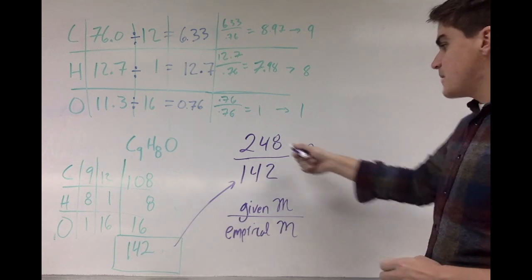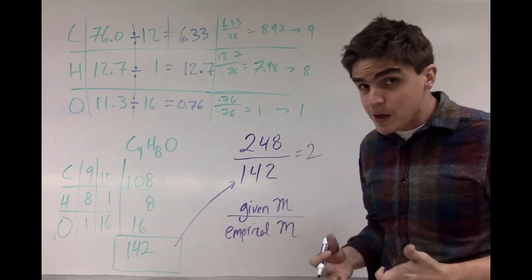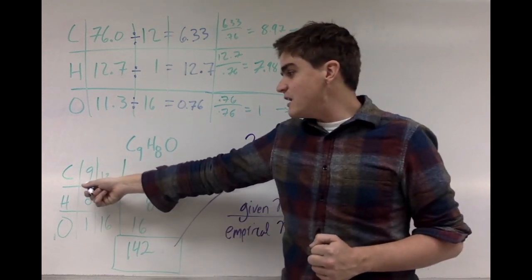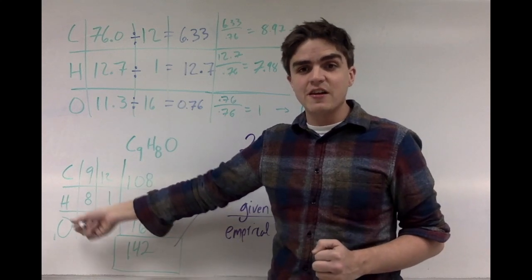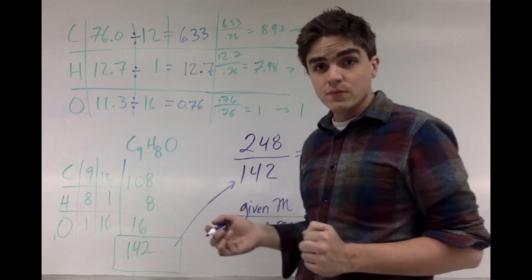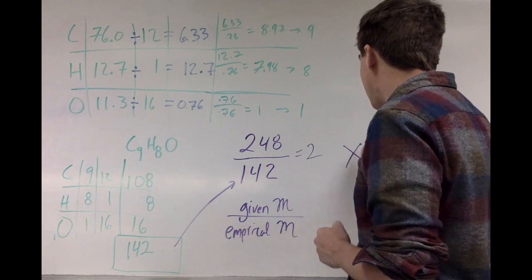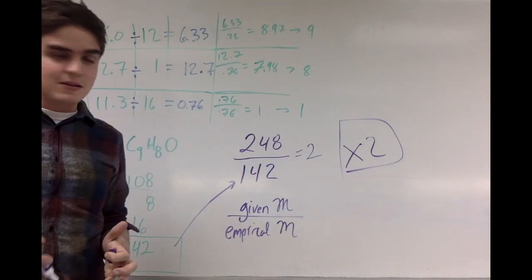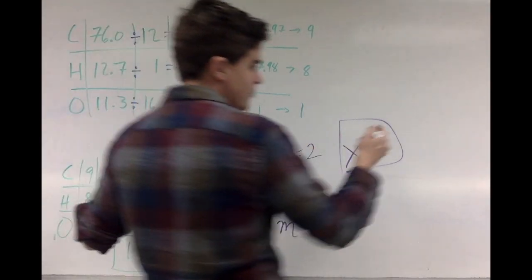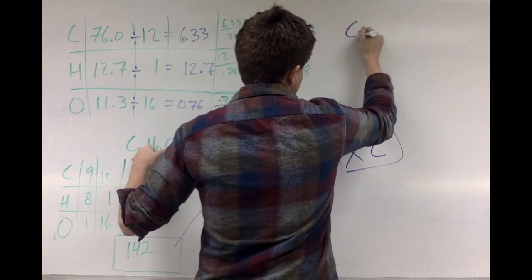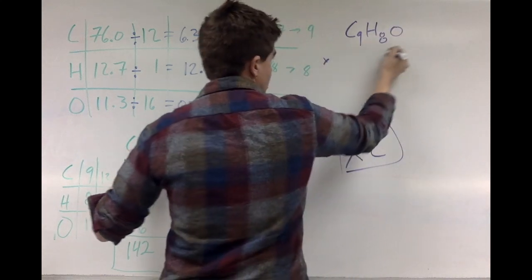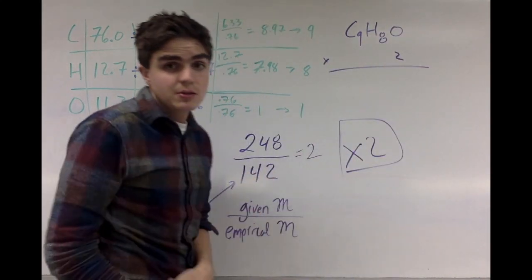So what that means is my molar mass has to be twice as big. Well, I could get the same molar mass by just multiplying everything by 2. If I had 9 of these, then I have 18. If I had 8 of these, then I have 16. If I had 1 of these, then I have 2. Right? Everything is times 2. Well, if everything is times 2, that's easy. I'm going to take my empirical formula here, my C9H8O1, and I'm going to just multiply each subscript by 2.